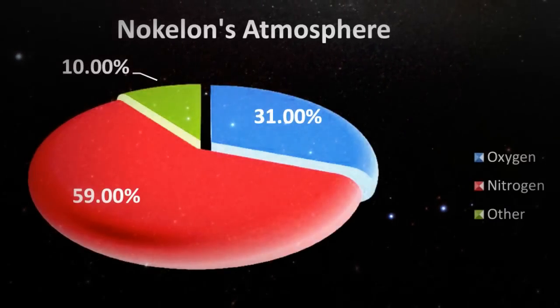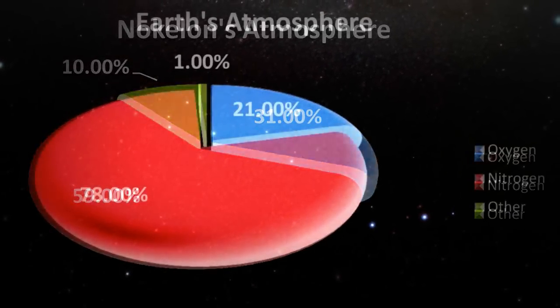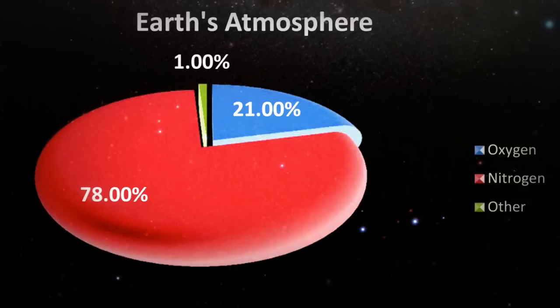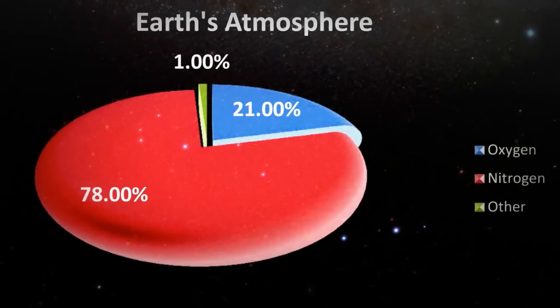Time to take an atmospheric analysis. We're going to compare the atmospheres of Nolan and Earth. Nolan's atmosphere is 59% nitrogen, 31% oxygen, and 10% other. Earth's atmosphere is 78% nitrogen, 21% oxygen, and 1% other.